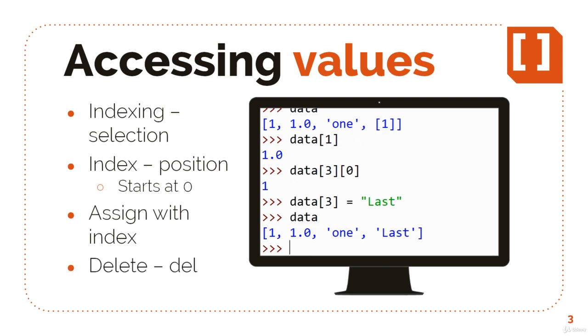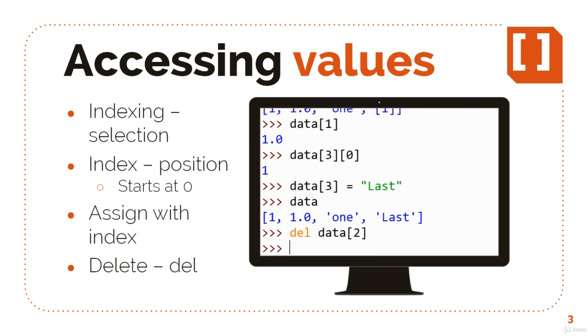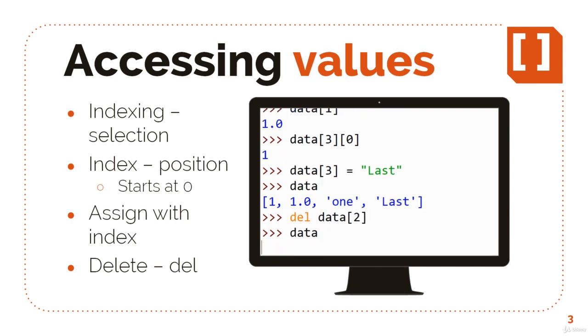You can delete a value from the list using the delete instruction DEL followed by the index. Note that this also works with variables and the list itself. So you can delete both.